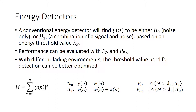The performance of an energy detector can be gauged with two statistics: the probability of detection as well as the probability of false alarm. Within different fading environments, the threshold used for detection can be better optimized to lower the probability of false alarm and increase the probability of consistent detection.